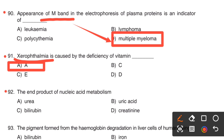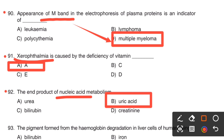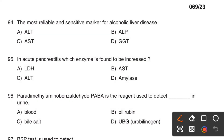Next question. The end product of nucleic acid metabolism: Option A, Urea. Option B, Uric acid. Option C, Bilirubin. Option D, Creatinine. The right answer is Option B, Uric acid. Uric acid is the end product of nucleic acid metabolism.